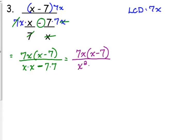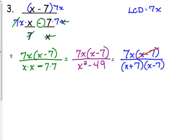So then when I multiply out my denominator, x times x is x squared, 7 times 7 is 49. The only thing that I have to worry about factoring here is the denominator because the numerator is already factored. The denominator, x squared minus 49, is the difference of perfect squares. So that factors into x plus 7 times x minus 7. We can cancel the x minus 7. We are left with 7x in the numerator and x plus 7 in the denominator. And that is it.